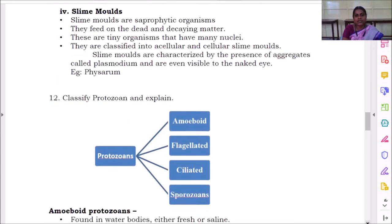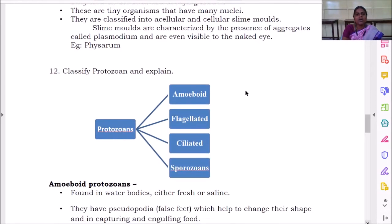The next question is classify protozoan and explain. So protozoans are classified as amoeboid, flagellated, ciliated, and sporozoans. Amoeboid protozoans.